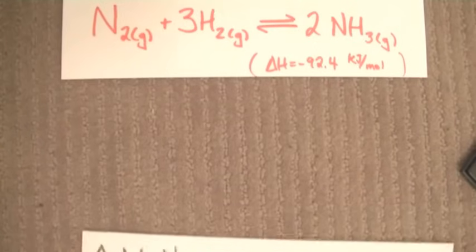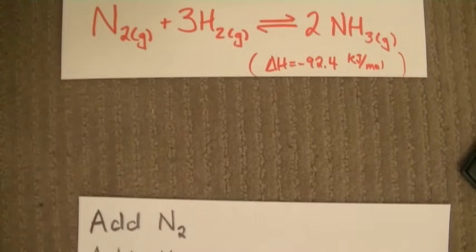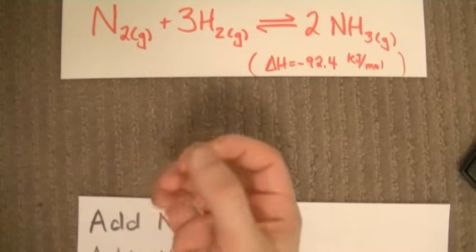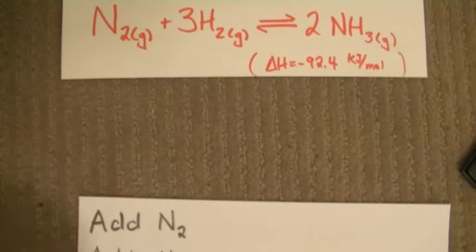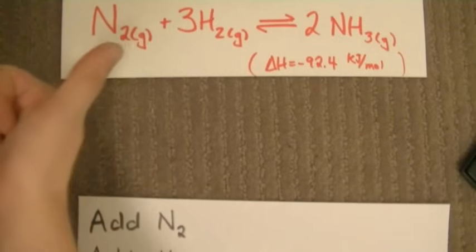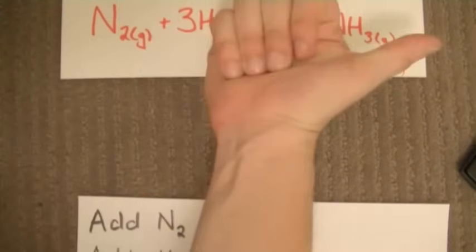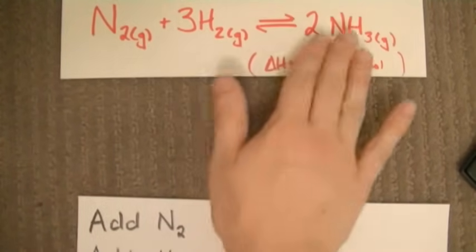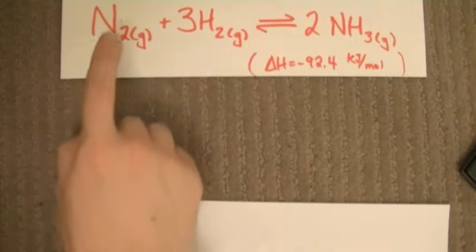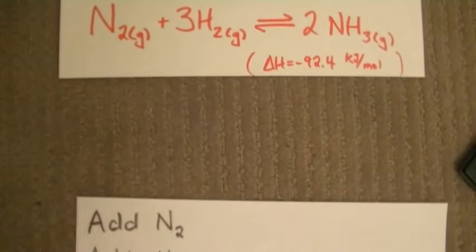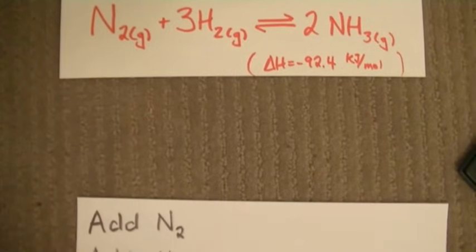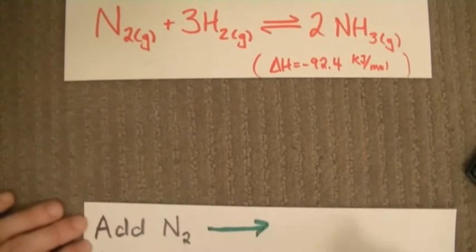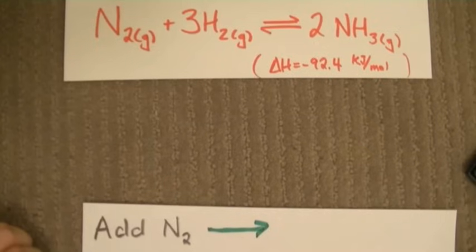What happens when we add N2? If we add nitrogen, we want to offset that change somehow. That's what Le Chatelier's principle says. In order to offset added nitrogen, we're going to consume it by reacting it, shifting the equilibrium to the right. If we can create some ammonia, that means we're consuming some of the N2. Qualitatively, when you add one of the reactants like N2, the equilibrium shifts to the right, or towards the products.